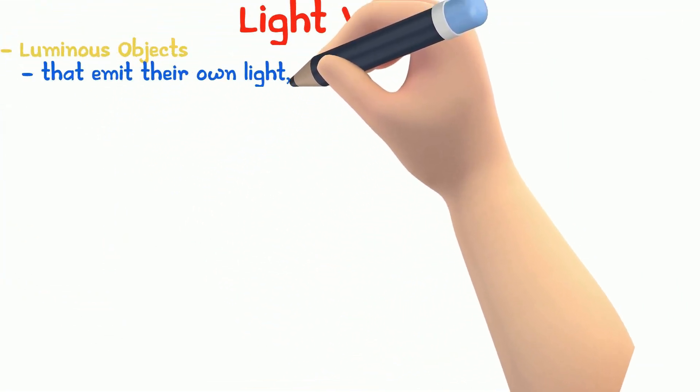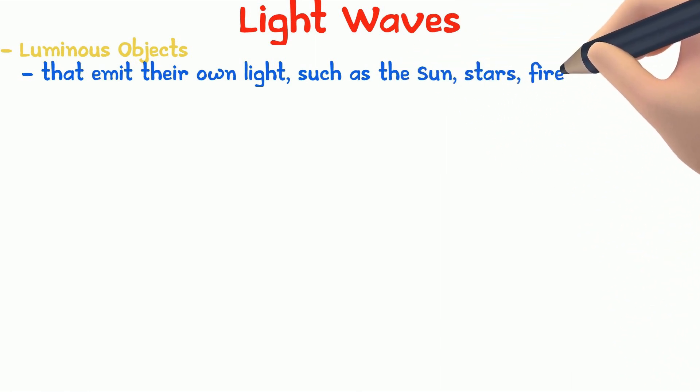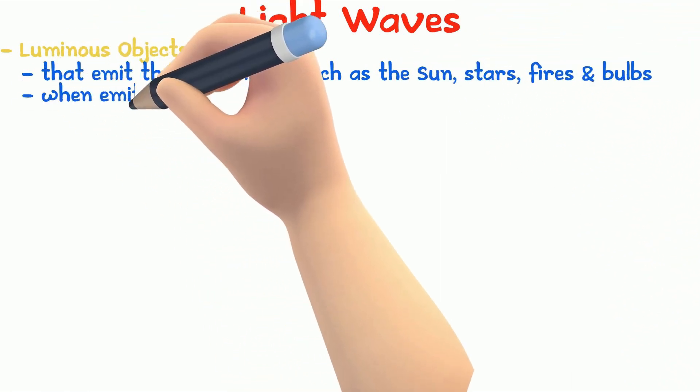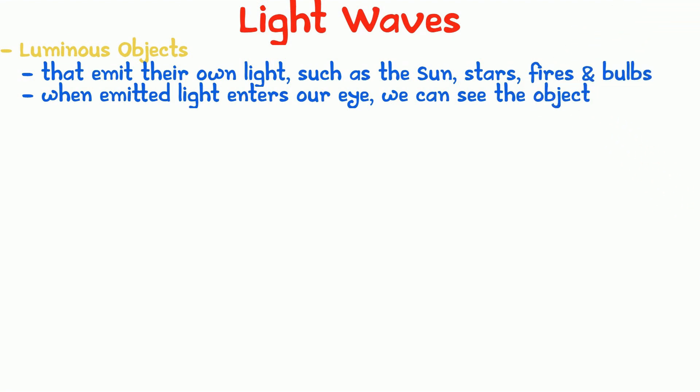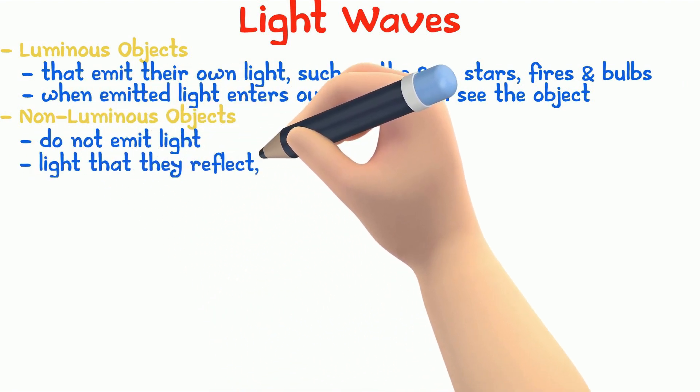Luminous objects are objects that emit their own light, such as the sun, stars, fires and light bulbs. When the light emitted enters our eyes, we can see the object. The way we see non-luminous objects that do not emit light is because the light that they reflect enters our eyes.